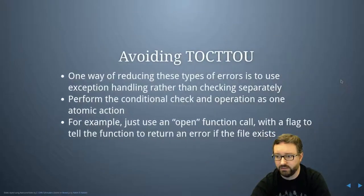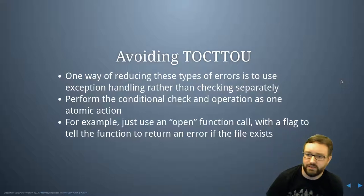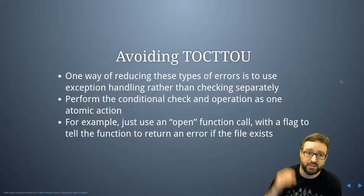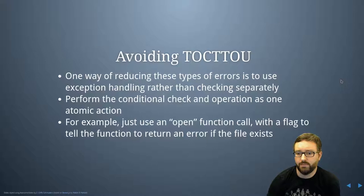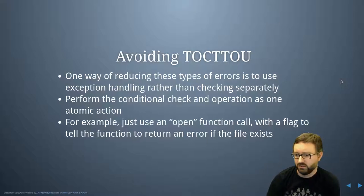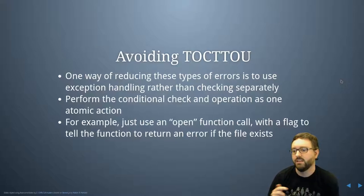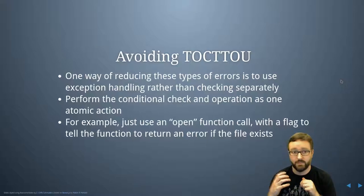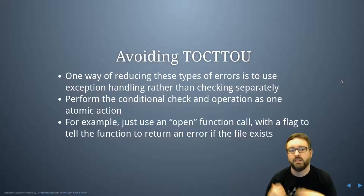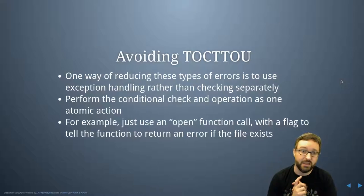The way we can reduce these kinds of errors is to use exception handling. Rather than doing a check and then as a separate instruction taking the action, we need to perform the conditional check and the operation as one atomic action. For example, just use an open function call with a flag to return an error if the file exists, because then the operating system kernel provides a way for that to be one atomic action so that nothing can happen in between.